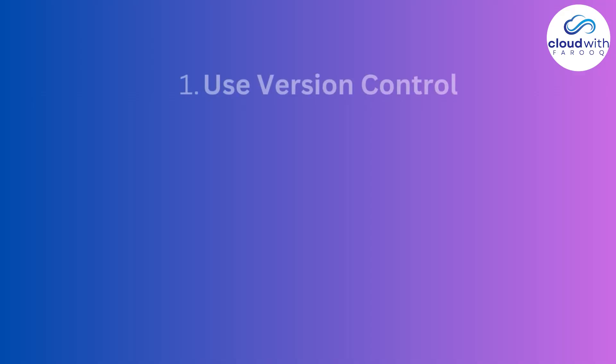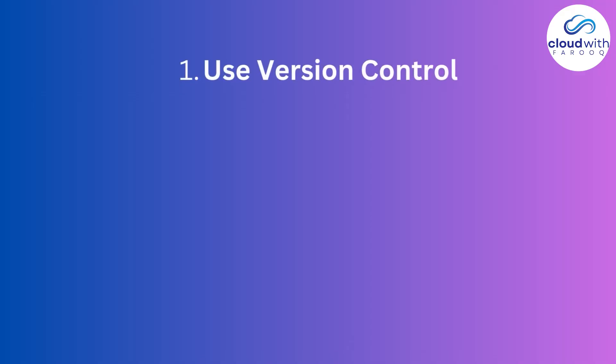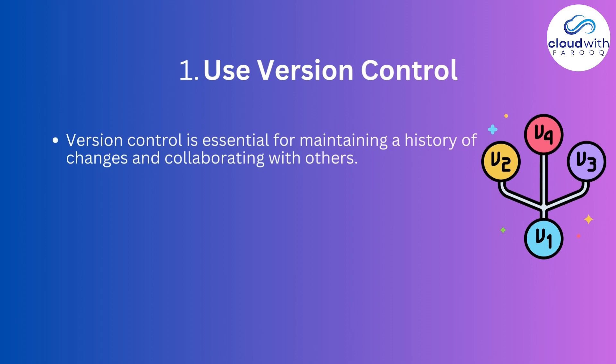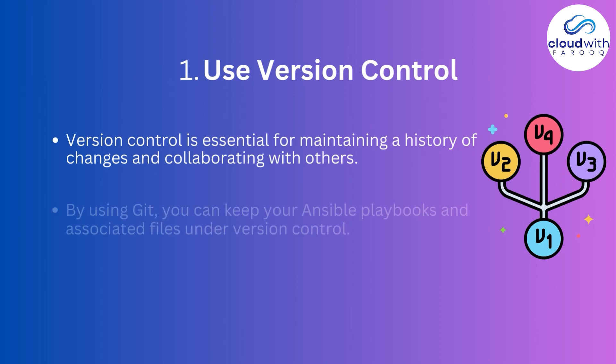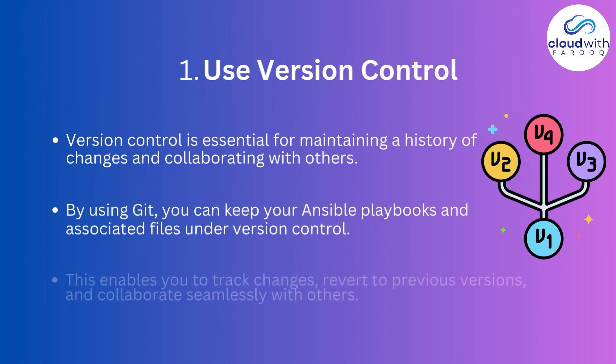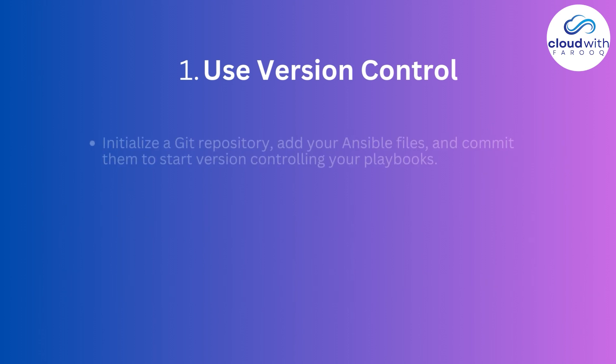Number one: use version control. Version control is essential for maintaining a history of changes and collaborating with others. By using Git, you can keep your Ansible playbooks and associated files under version control. This enables you to track changes, revert to previous versions, and collaborate seamlessly with others.